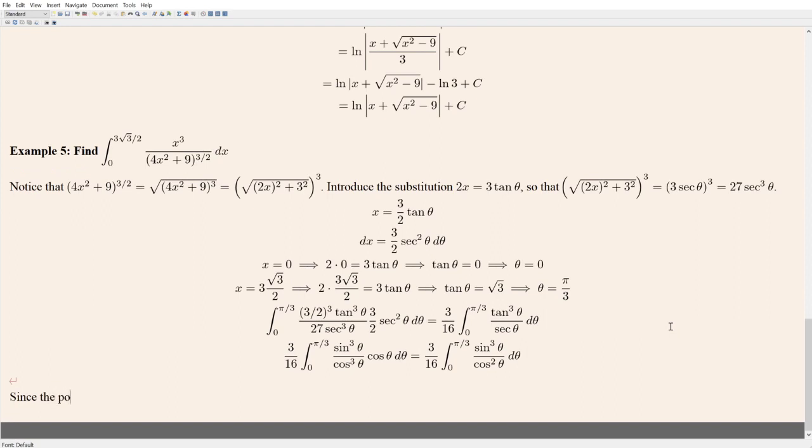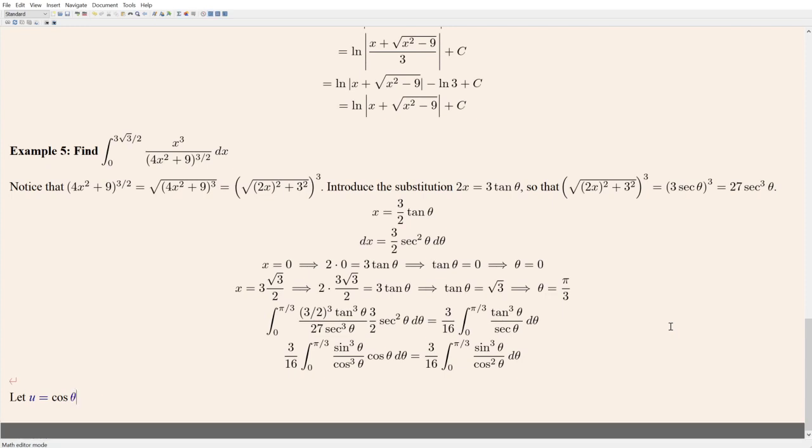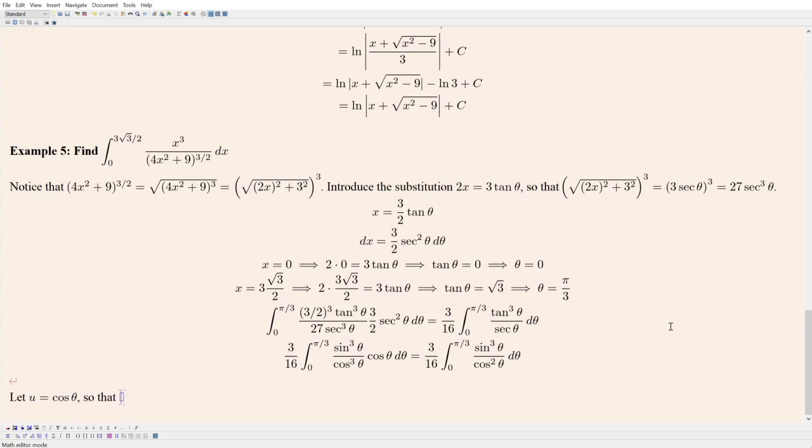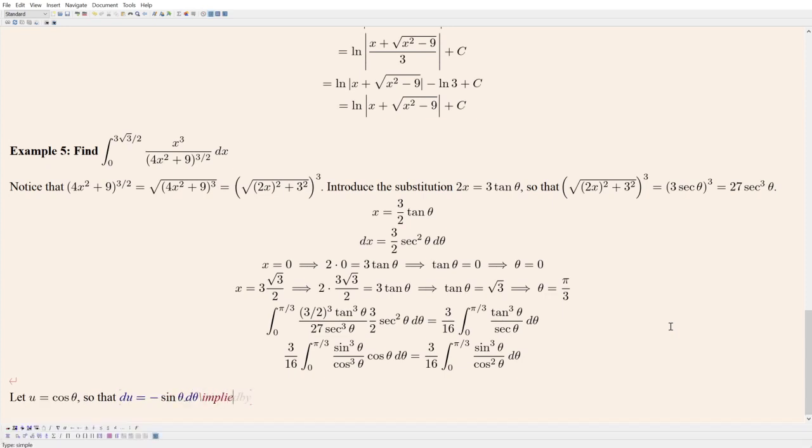Since the power... well, I don't know if it's going to work all the time, but in this case at least it will. So let's let u equal cosine theta, so that du is equal to minus sine theta d theta, and consequently d theta is equal to minus one over sine theta du.